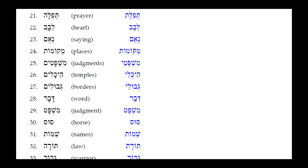Number twenty-three: Mishpatim — we take the Hirik Yod Mem Sofit off and replace it with a Seri Yod to show masculine plural construct. The Kamets under the Pe, which is an open unaccented syllable, reduces to a simple Sheva. Result: Mishpatei.